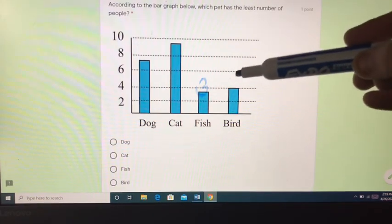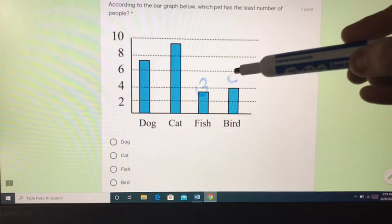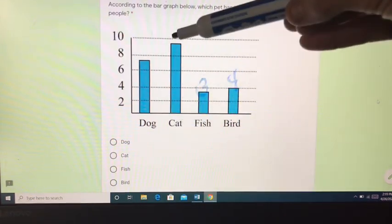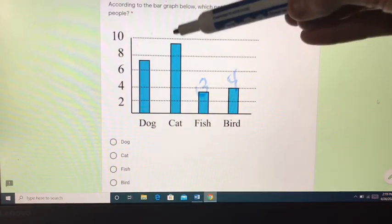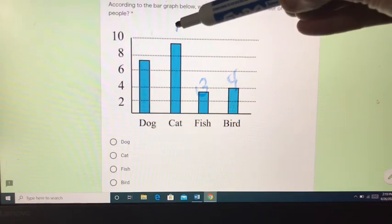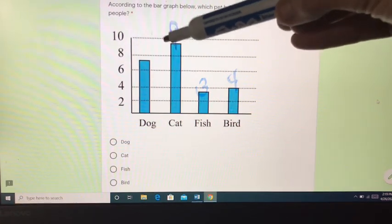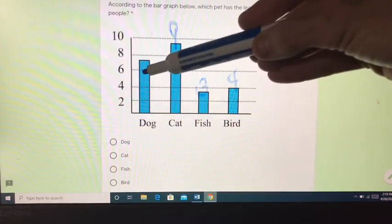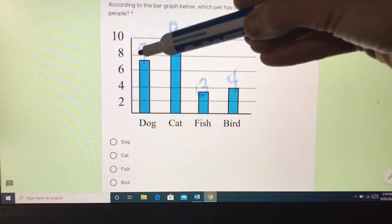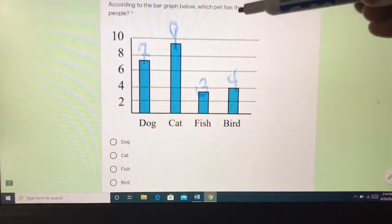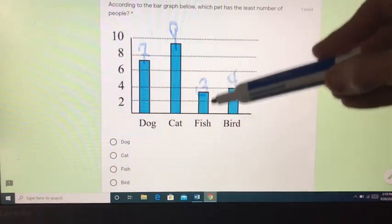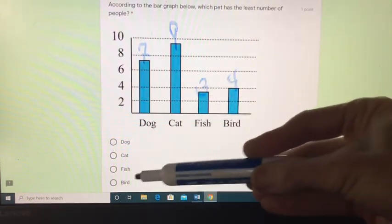Bird is just above fish at four. Cat is way up here between eight and ten, and the number between eight and ten is nine. And dog is between six and eight. The number between six and eight is seven. So if I'm picking the least, I have to pick fish as my answer.